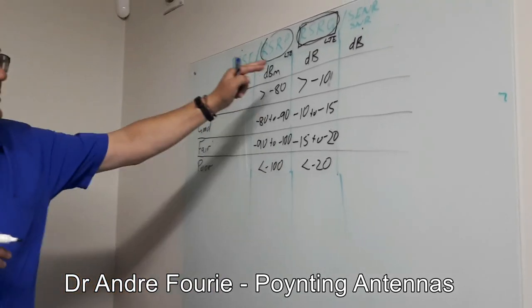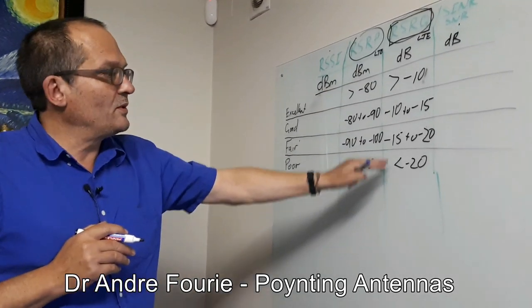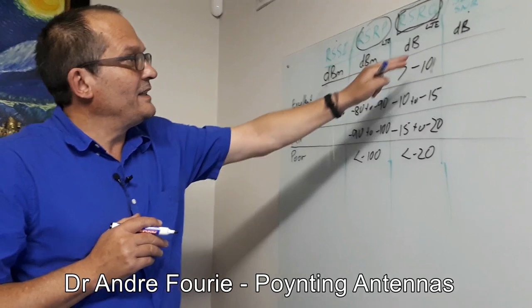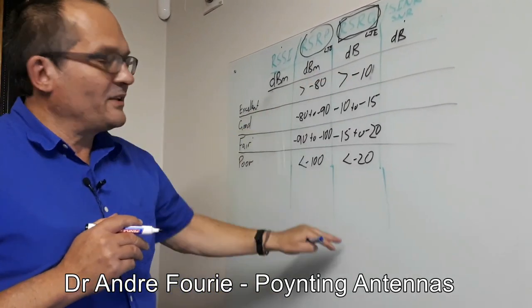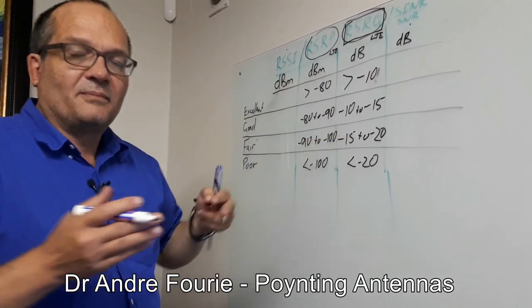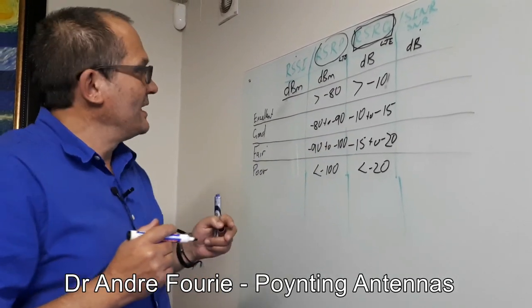So those are the values you should look for. This one's certainly the more important one. It takes noise into account. And this one is similar to what you used to have for signal-to-noise ratio, but it's very specific for the resource blocks, the antennas, because you've got more than one antenna connected.